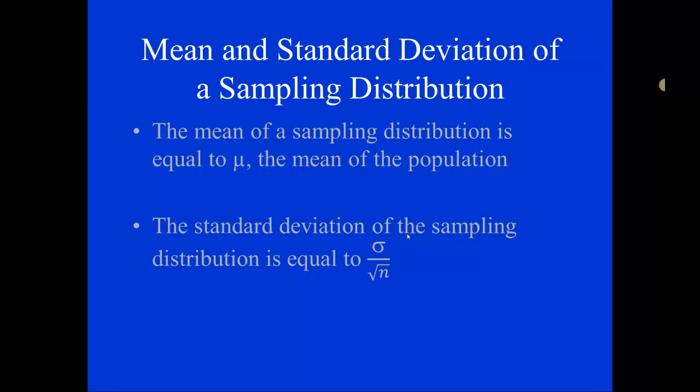It means that our estimator, x bar, can be considered unbiased. The other thing we found out is that the standard deviation of the sampling distribution is equal to sigma divided by square root of n, where sigma is the population standard deviation.